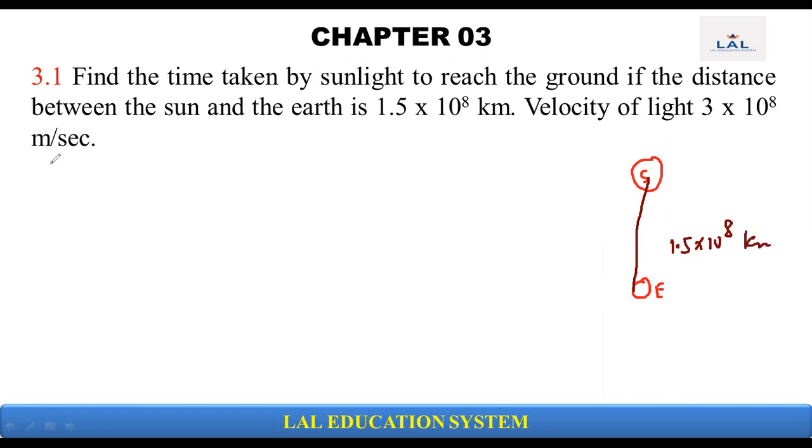The distance between sun and earth is 1.5 × 10^8 km. Our distance value is 1.5 × 10^8 km, and the velocity of light is 3 × 10^8 meters per second.